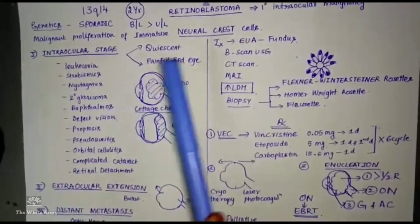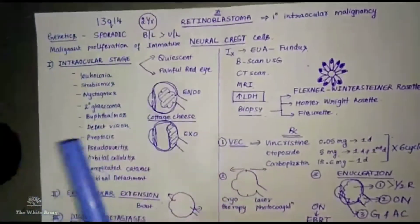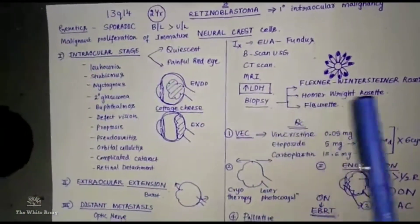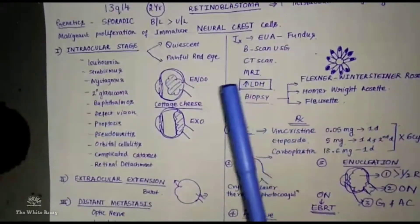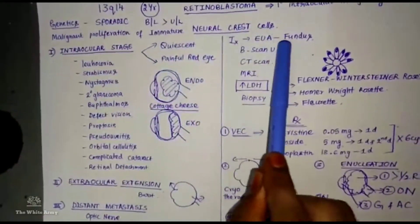The most common age of presentation is 2 years of age, 18 to 24 months. The pathogenesis is due to malignant proliferation of immature neural crest cells.